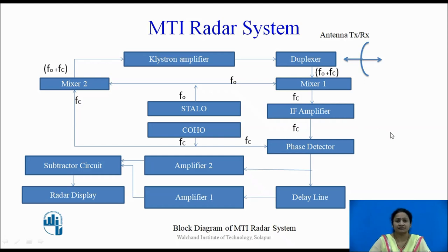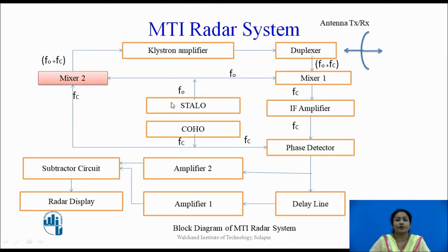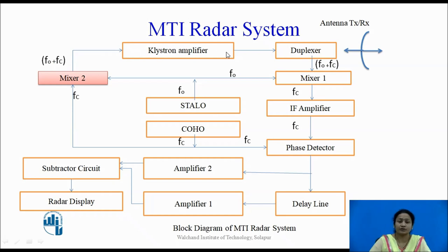Now let us see how the working of the MTI Radar System takes place. The signals generated from the two oscillators, STALO and Coherent Oscillator, are given as inputs to Mixer 2, which sums the two signals and gives the output as F0 plus FC. This F0 plus FC signal acts as the transmitting signal from the transmitter. It is fed to the multi-cavity klystron amplifier, which increases the power strength of the signal to high power, and then it is fed through the duplexer to the antenna.